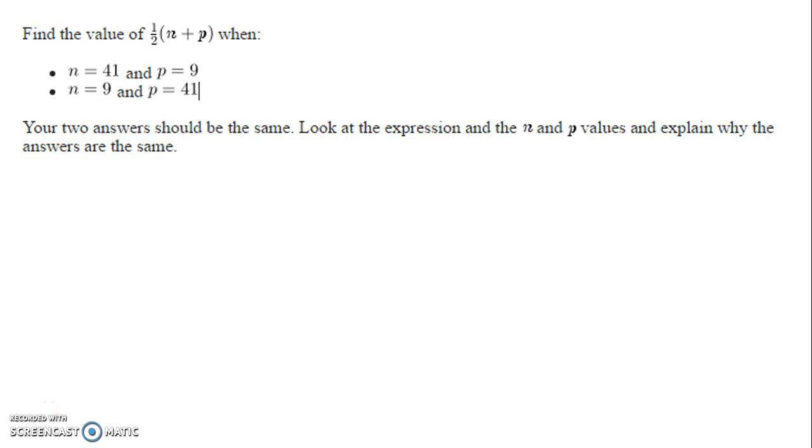This problem is to help you with number 5 on CR Helper number 31. Find the value of 1/2 times the quantity (n+p) when n=41 and p=9. Then we'll complete the same problem when n=9 and p=41.